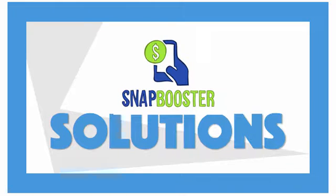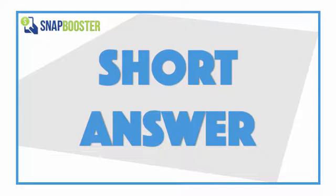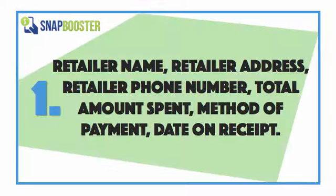Hi, this is Snap Booster Solutions. Today we're going to answer the question: what information do you take from receipts? The short answer is we take the retailer name, the retailer address, the retailer phone number, the total amount spent, the method of payment, and the date on the receipt.